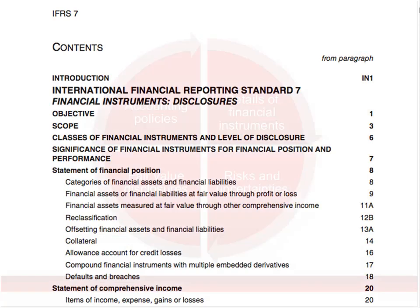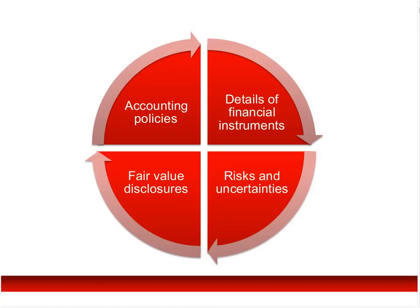In keeping with giving you an overview of disclosures needed, let's start with disclosures on financial instruments in IFRS 7. There are broadly two categories. On the right side of the circle you've got details of the financial instruments themselves — some sort of tabular approach disclosing different categories of financial instruments, how they work, and sometimes detailed disclosures about the nature of those instruments.